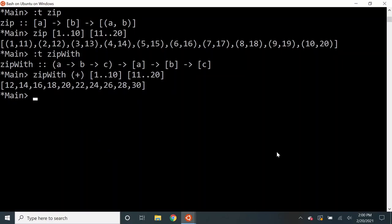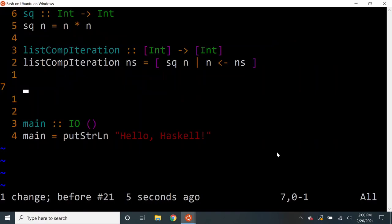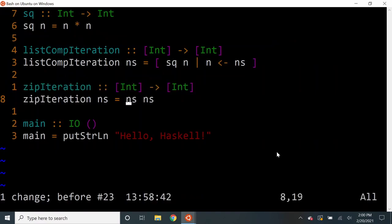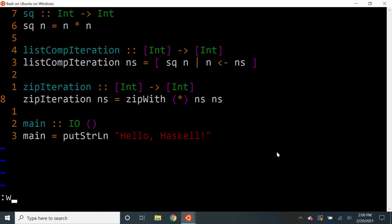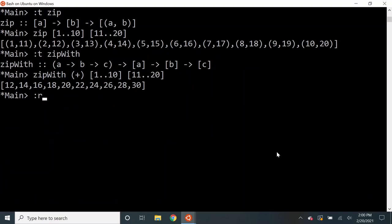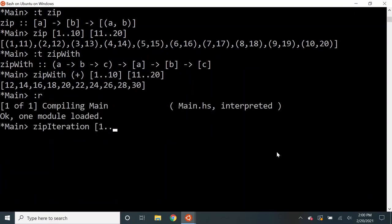In our problem we can simply use our list as both the input lists of zip width operation and use the multiplication operation as a zipper operation to produce the required result which is squaring of each of the numbers. Let's check if our function compiles. It does. Let's test with our usual input and we can see that we still get the correct result.